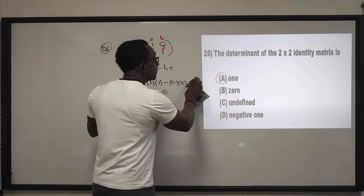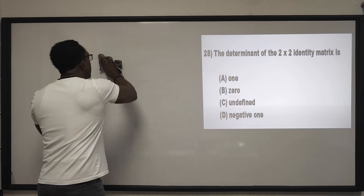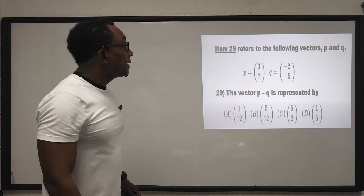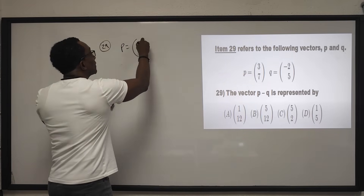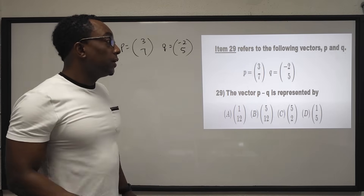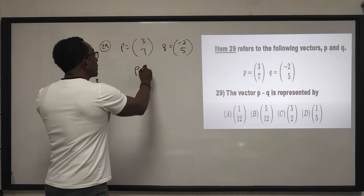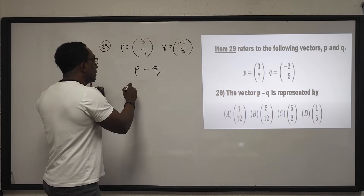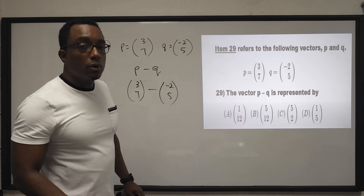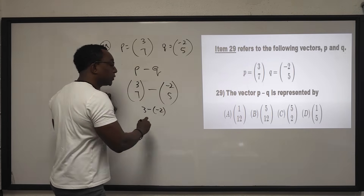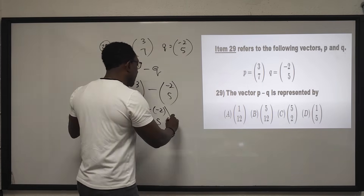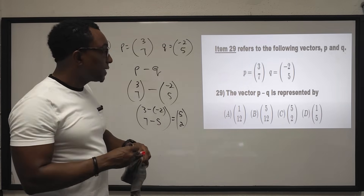Question 29: P is the column vector (3, 7) and Q is the column vector (negative 2, 5). Find P minus Q. Subtracting corresponding elements: 3 minus (negative 2) equals 5, and 7 minus 5 equals 2. The result is column vector (5, 2). The answer is C.